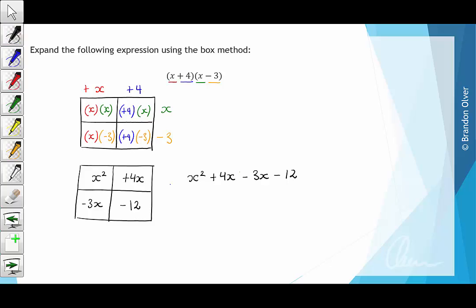And to simplify we're going to collect like terms. So we remember that a like term has the same pronumeral or variable raised to the same power. So in this case, the 4x and the negative 3x are both like terms and they're going to combine to just give x. So we're going to be left with x squared plus x minus 12.